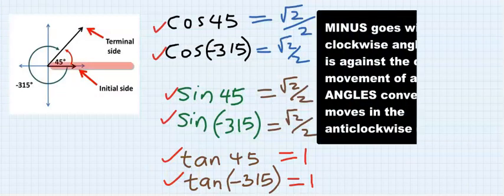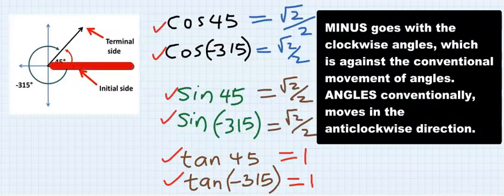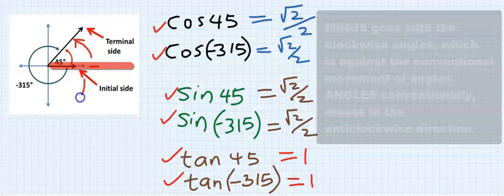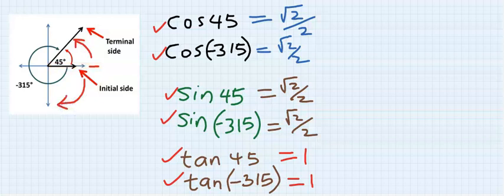Why the minus? If we go towards the direction from here, it is positive. If we go against the convention, we write the angle but include a negative.